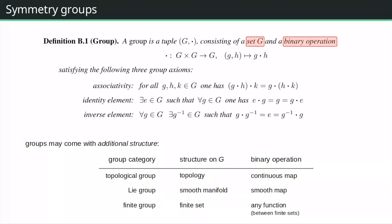When reading about group theory, pay attention to which category of groups you're working in — finite groups, topological groups, compact groups, or Lie groups. Each assumes additional structure. A topological group has a topology, and the binary operation must respect it. A Lie group is additionally a smooth manifold, requiring smooth maps. A finite group is simply a finite set with no continuous structure.